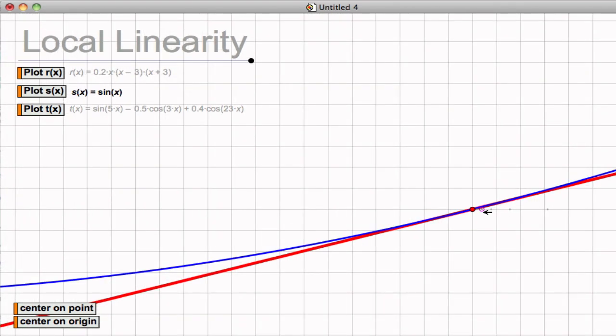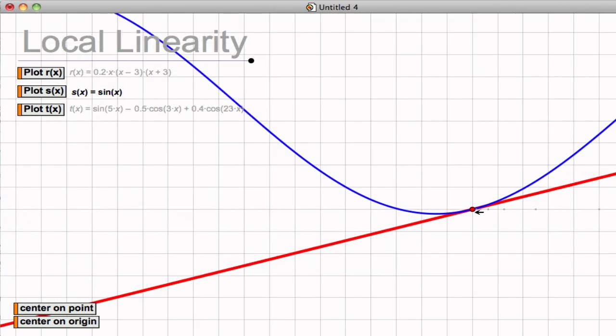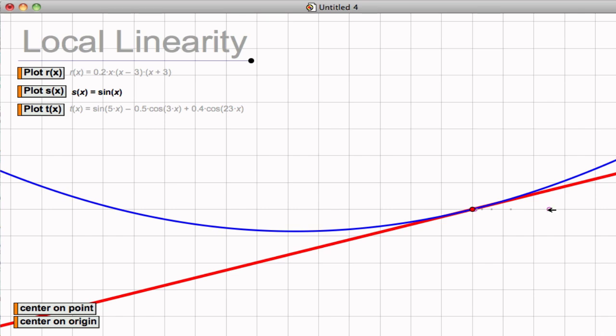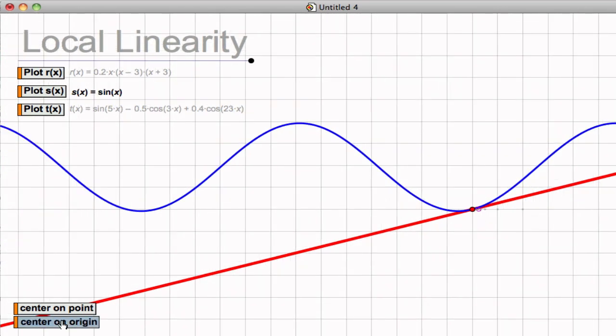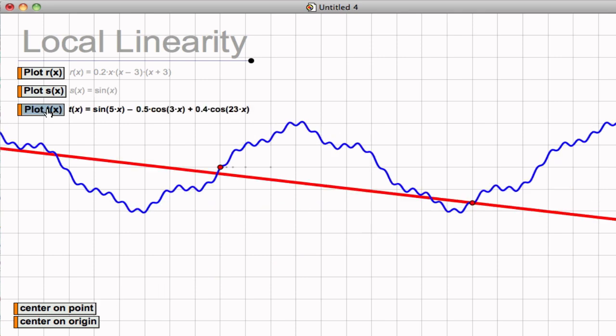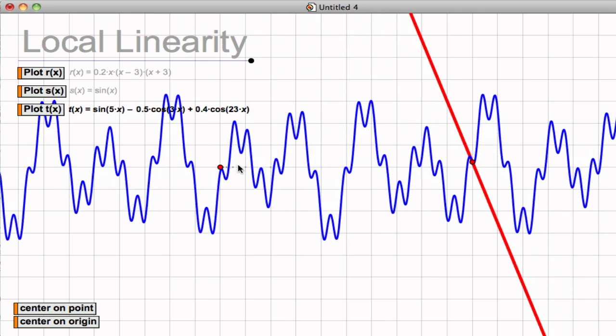So we'll look at one last type of function. Zoom back out here. Another more complicated function that has more sporadic behavior. Again, I can move the tangent line and we can see that its slope at any given point resembles the slope of the curve.